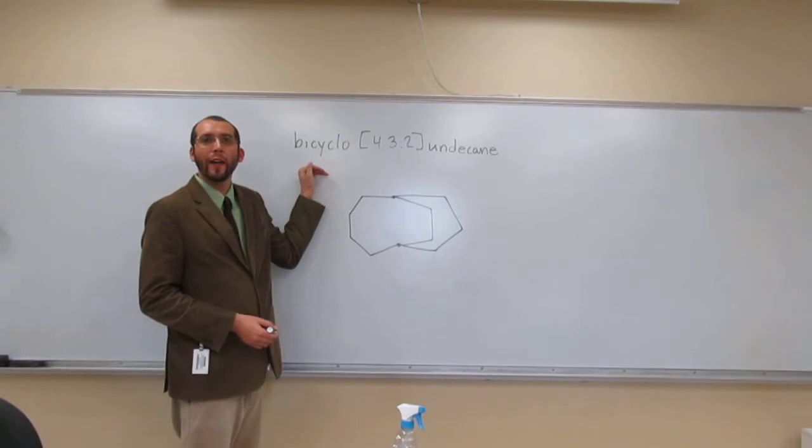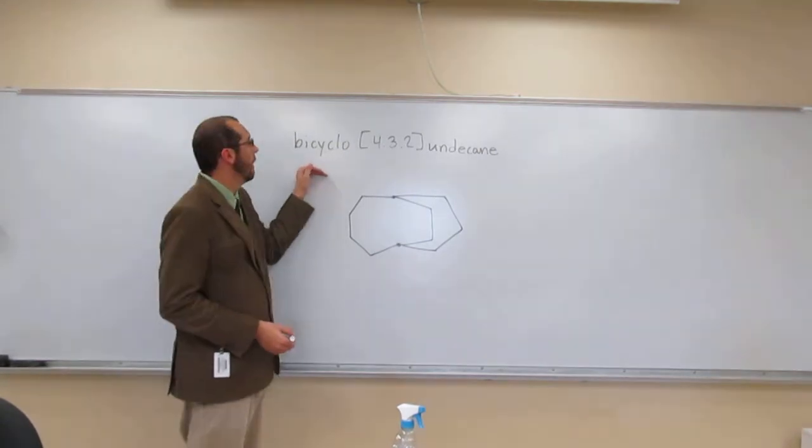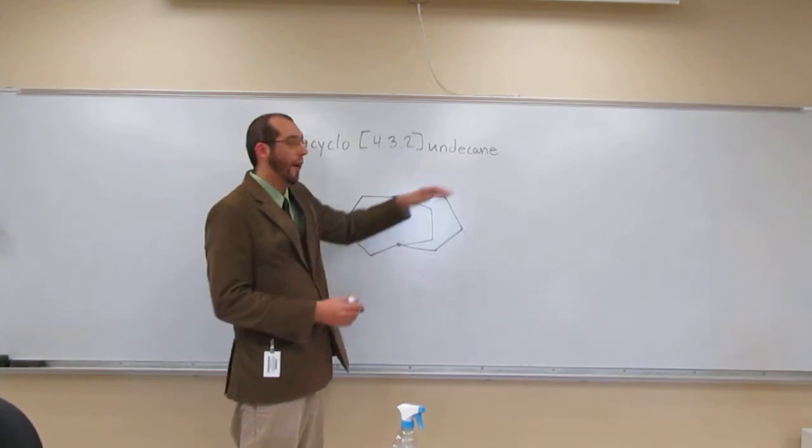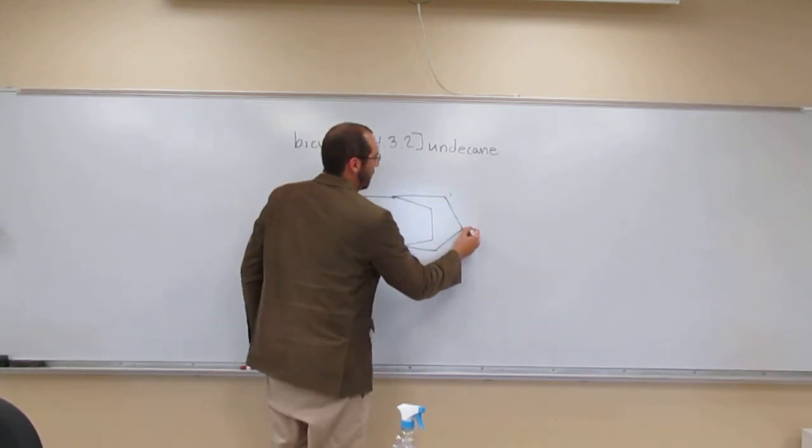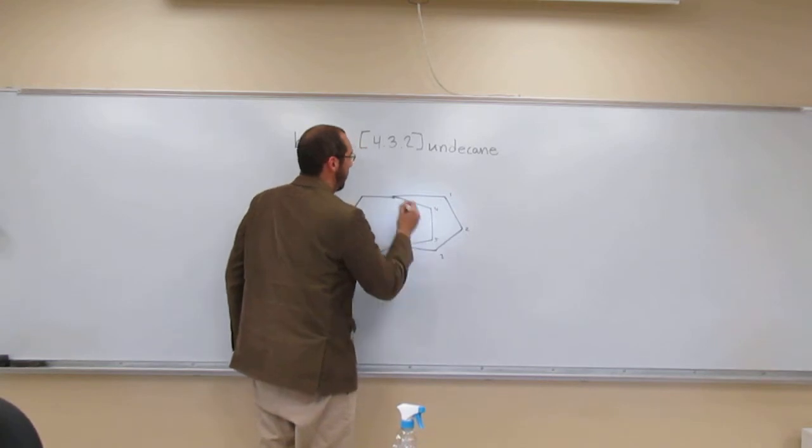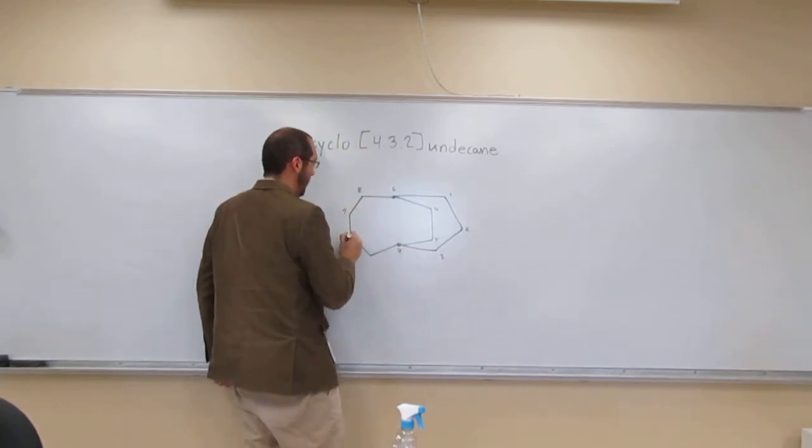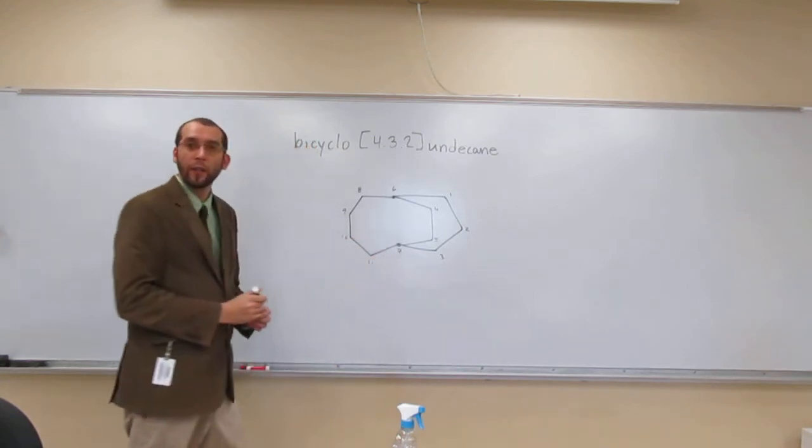So it's a bicyclo, hopefully by now everybody can see that, right? Undecane. So how many carbons do we have? 11. 1, 2, 3, 4, 5, 6, 7, 8, 9, 10, 11. So we're good there, right?